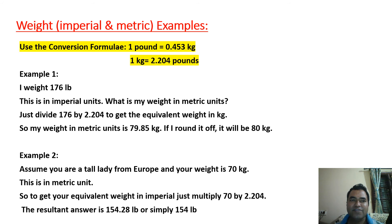Similarly you can see the weight example in imperial and metric. Here the formulas that you are supposed to use is 1 pound equals 0.453 kilograms and 1 kilogram equals 2.204 pounds. I weigh 176 pounds. This is in imperial units. So if I divide 176 by 2.204 you get the weight in kilograms. This will be 79.85. I can round this off to 80 kilograms.